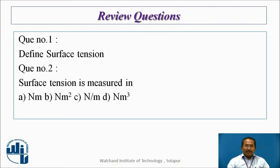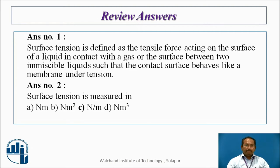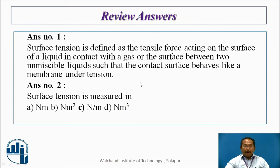Question one: What is surface tension or define surface tension? Question two: What is the unit of surface tension or how do you measure it? Surface tension is defined as the tensile force acting on the surface of a liquid in contact with a gas, or the surface between two immiscible liquids, such that the contact surface behaves like a membrane. That is why the pin floats. It is measured in Newton per meter (N/m).